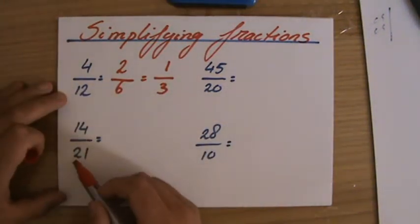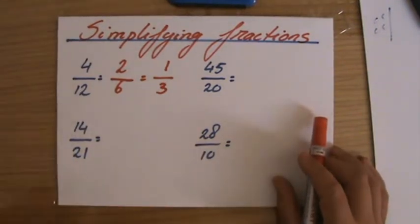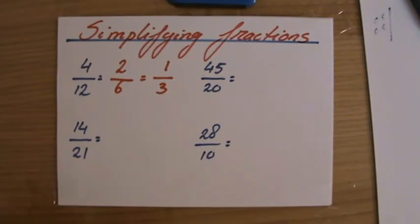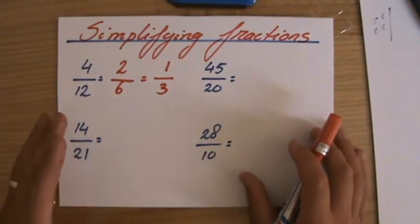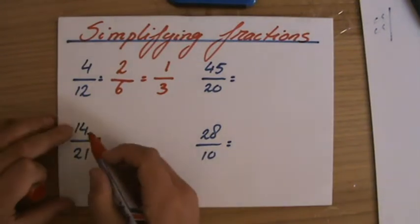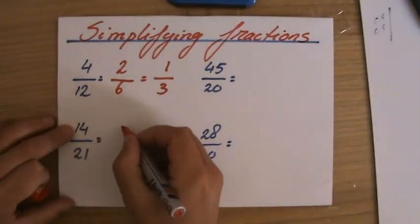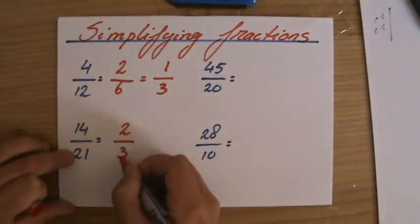14 over 21. Well, 14 is even, 21 is odd, so they do not have a factor of 2 in common. Well, 14 has 2 and 7. I can divide by 7. What about 21? We have 1 and 21, 3 and 7. Hang on a minute. 14 divided by 7 is 2, and 21 divided by 7 is 3.